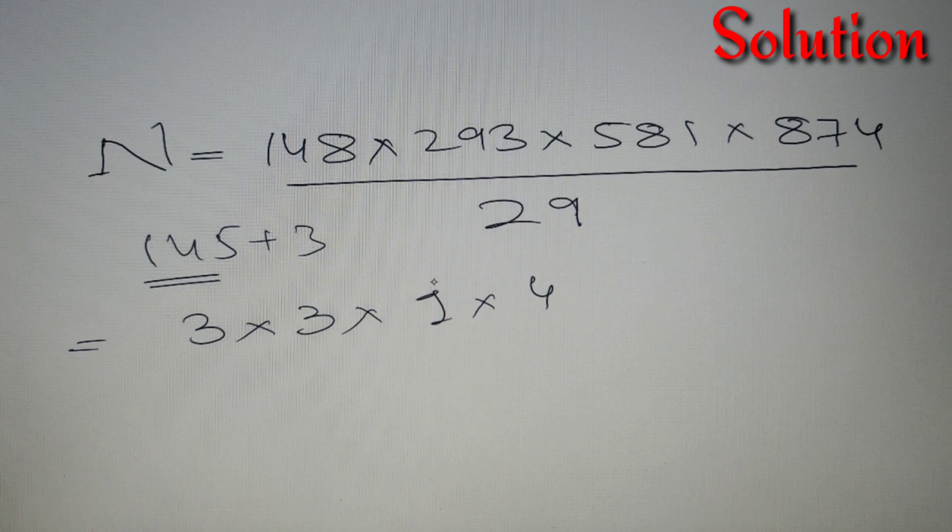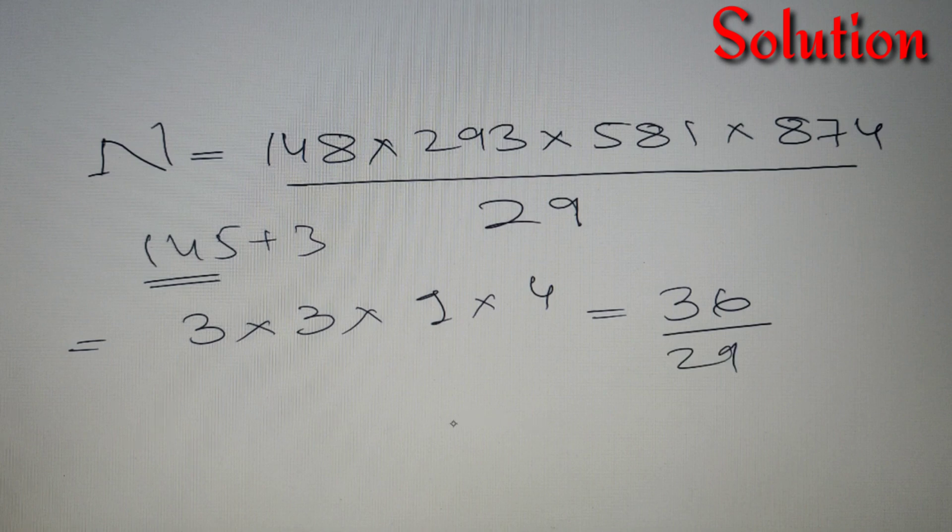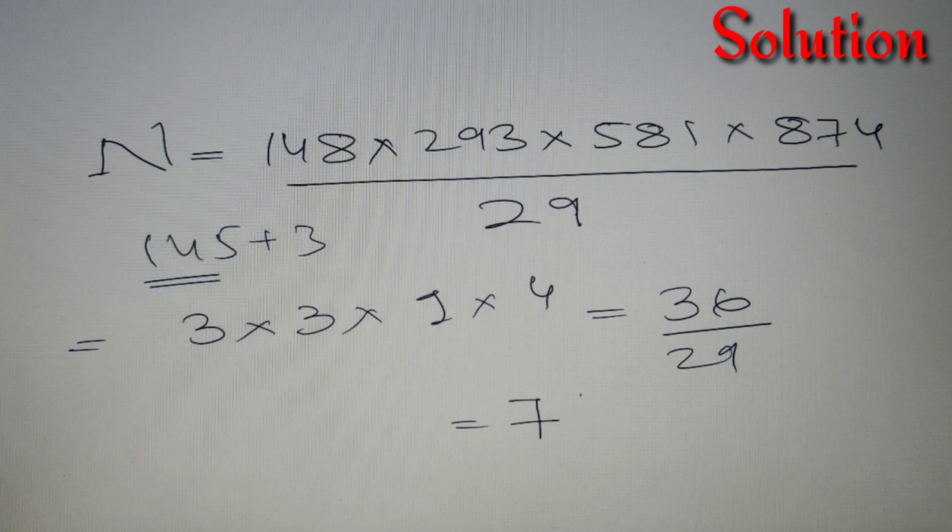You have to be quick with numbers to solve questions on number system quickly. We have got these four numbers: 3 into 3 into 1 into 4 and the product is 36. When 36 is divided by 29 the remainder is 7 because 36 is 29 plus 7. So our final answer is 7.